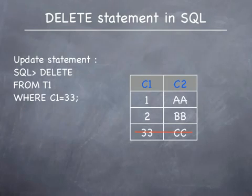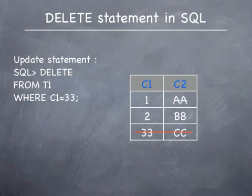On this slide you are looking at the DELETE statement that is written at the SQL prompt as a SQL command. The command that is written is DELETE FROM T1 WHERE C1 equals 33. This statement removes the row in the table where the column C1 is taking the value 33, which is the third row.